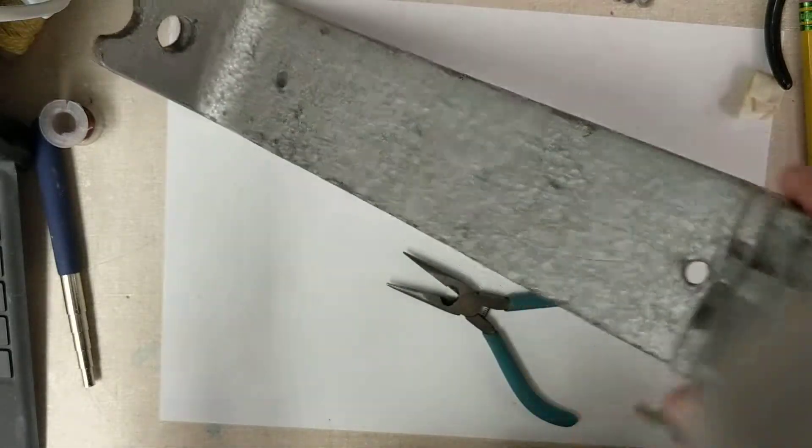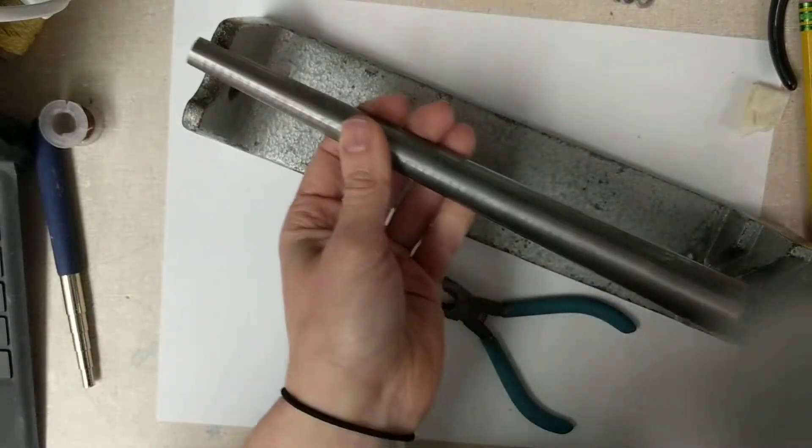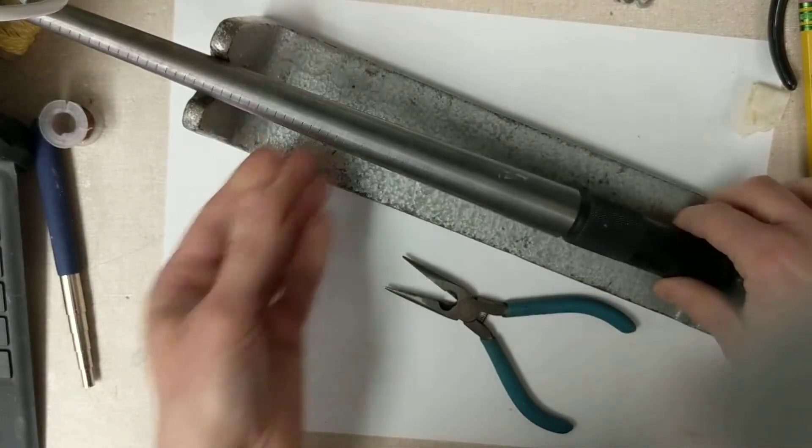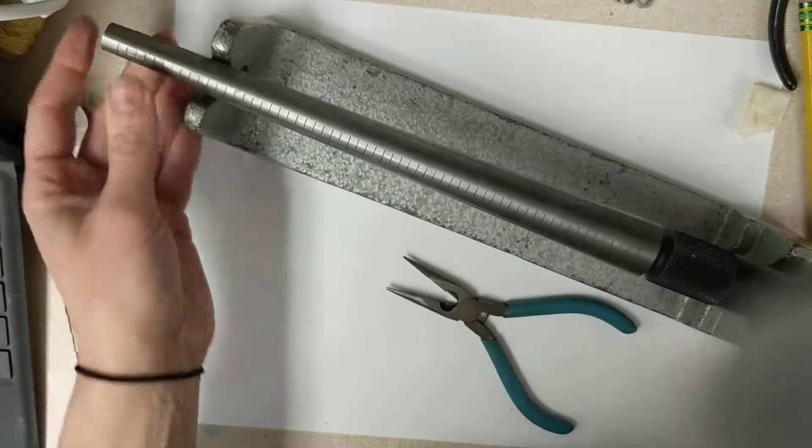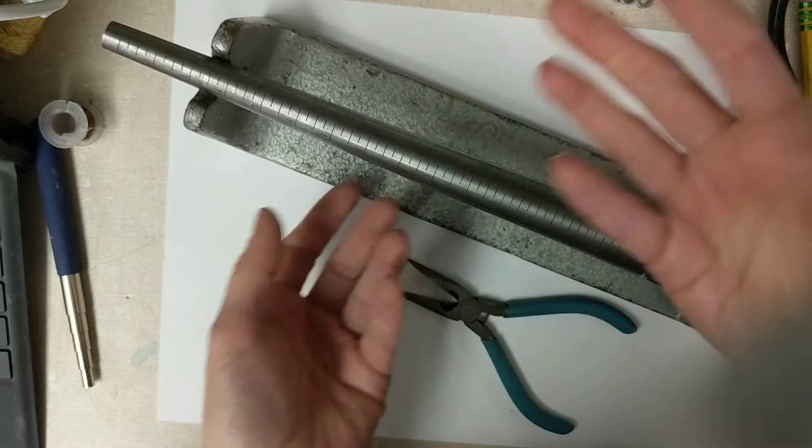This piece down underneath is the ring mandrel stand. You have options of how you install it—up high, down lower—any of them work. It's just a way to hold it so you can work around it and create your ring.